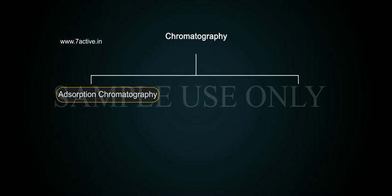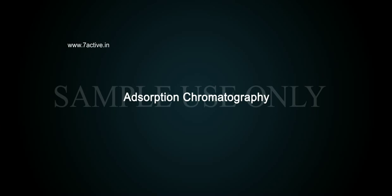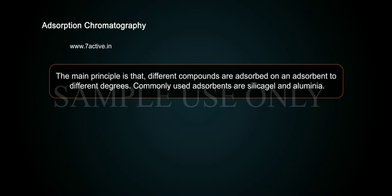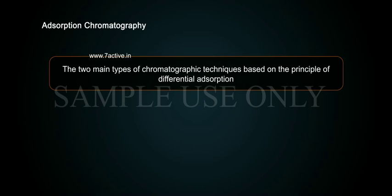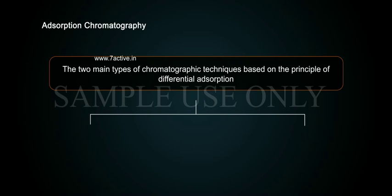Two of these are: A. Adsorption Chromatography and B. Partition Chromatography. The main principle of Adsorption Chromatography is that different compounds are adsorbed on an adsorbent to different degrees. Commonly used adsorbents are silica gel and aluminium. When a mobile phase is allowed to move over a stationary phase adsorbent, the components of the mixture move by varying distances over the stationary phase.